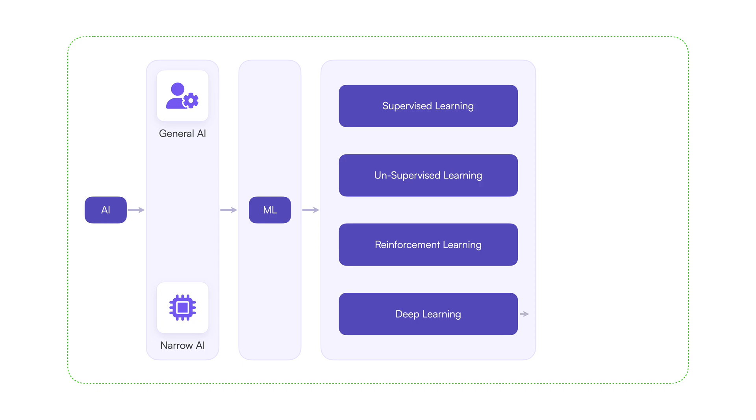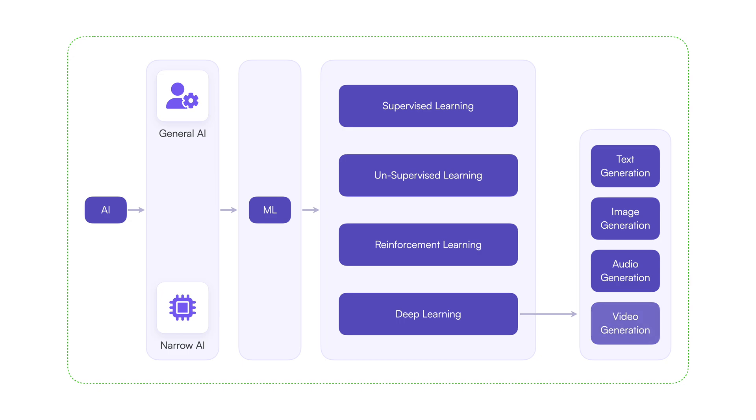Deep learning is what is currently used in text processing, audio, image, and video processing and generation.